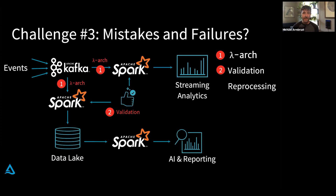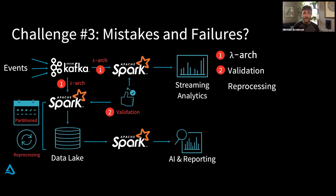A pretty common pattern here is to set up a reprocessing framework. Instead of storing all your data in one giant directory, partition it — usually time is a good dimension. We'll partition it by days, hours, minutes, whatever makes sense for the scale of data. We'll build this reprocessing framework so that if anything goes wrong, instead of reasoning about updating data in place, we'll delete everything and reprocess that partition to correct these mistakes and failures. And that works.